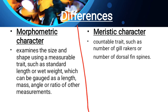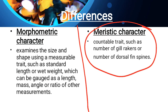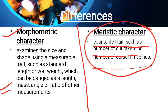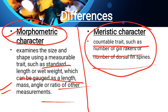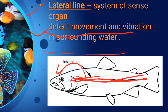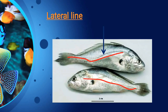Meristic characters are countable traits — which we can count, like gill rakers, number of dorsal fin rays, pectoral fin rays. Morphometric characters refer to size, shape, and measurable traits — such as standard length, weight, and the measurement of mass, angle, and ratio. These are the key differences between morphometric characters and meristic characters. Fish can be divided and classified on the basis of both.